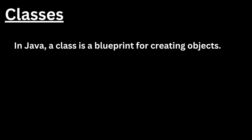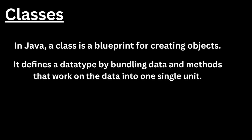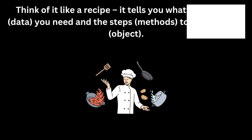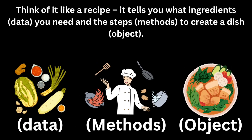Let's start with classes. In Java, a class is a blueprint for creating objects. It defines a data type by bundling data and methods that work on the data into one single unit. Think of it like a recipe — it tells you what ingredients (data) you need and the steps (methods) to create a dish (object).